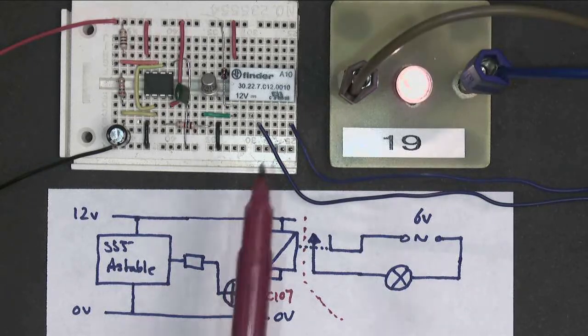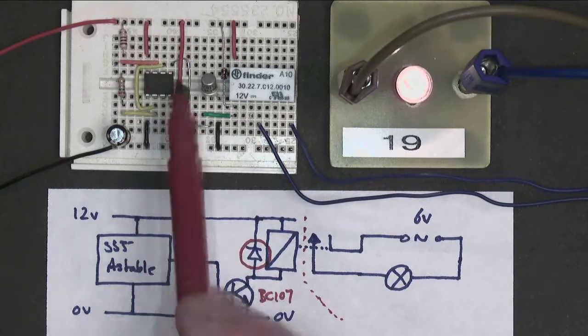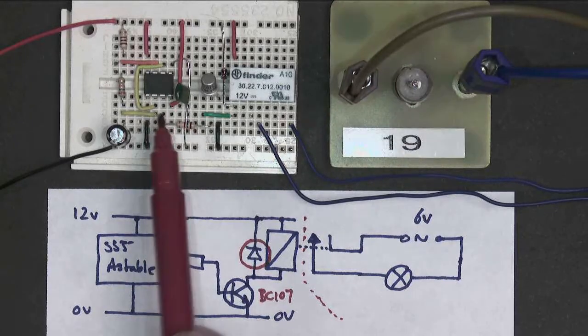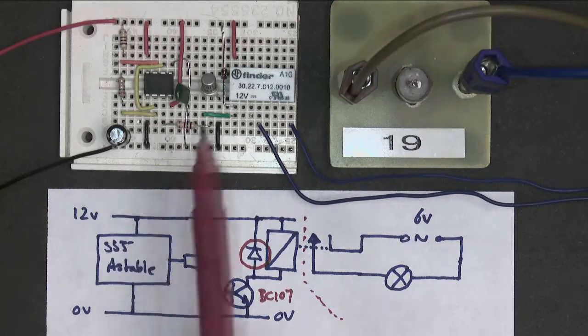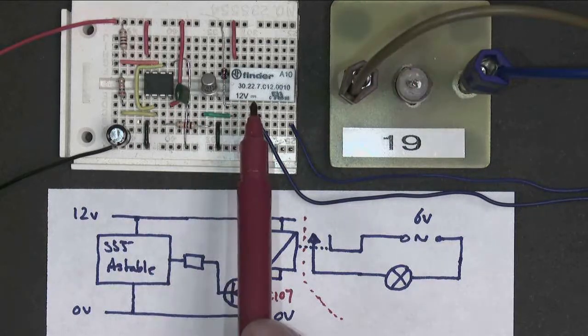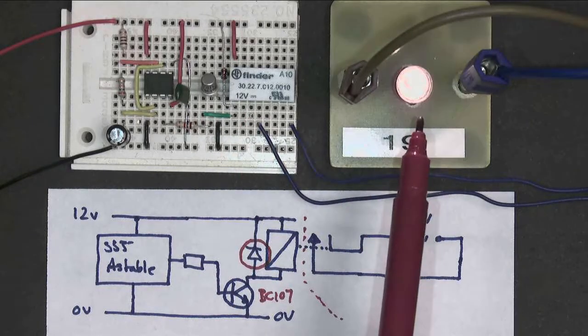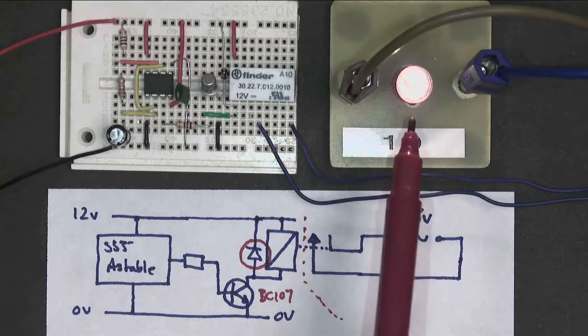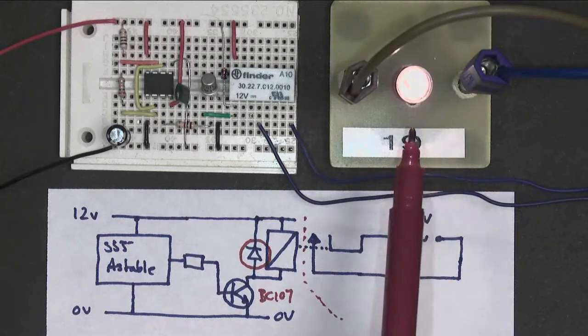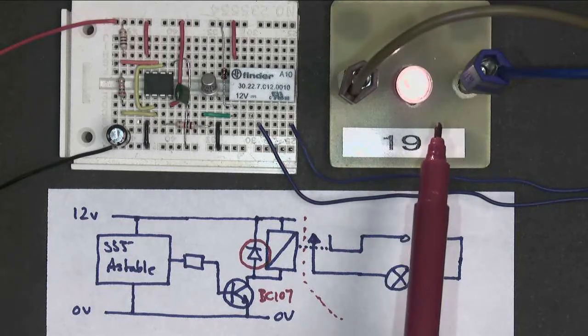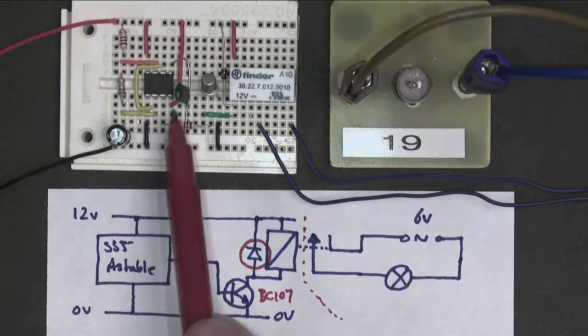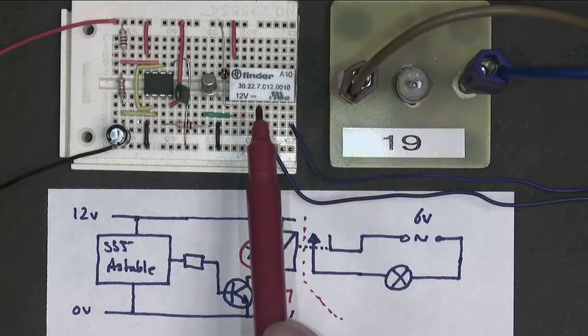So this is the advantage of a relay, is that a relatively complex electronic circuit here, working at one voltage, can use a transistor and a relay to control loads which can take a high current or high power, or work at a different voltage, work at AC, work at DC, work at hundreds of volts. And this small circuit can control this load through a relay.